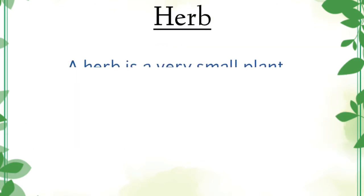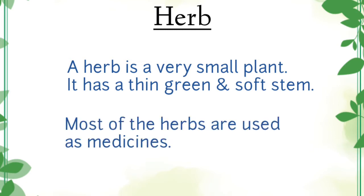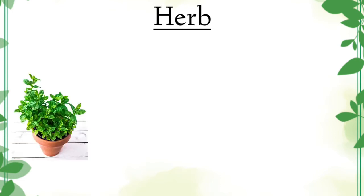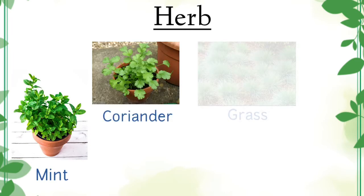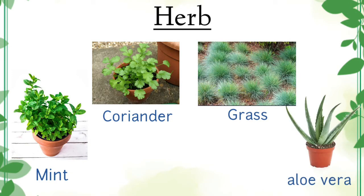Herb. A herb is a very small plant. It has a thin, green and soft stem. You know children, most of the herbs are used as medicines. Examples of herbs are mint, coriander, grass, aloe vera, etc.